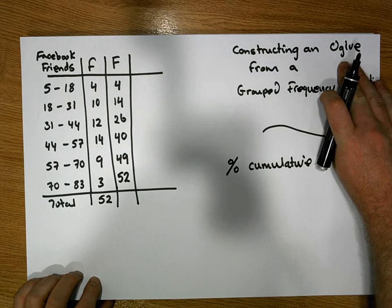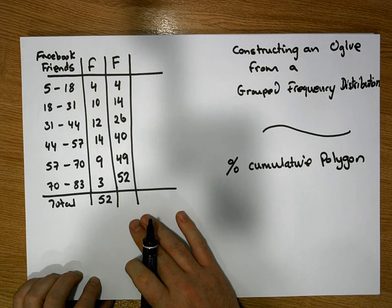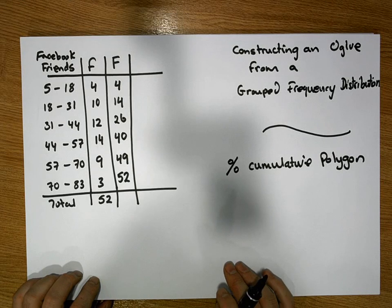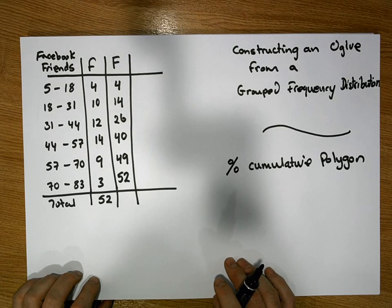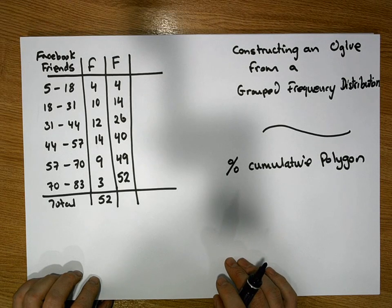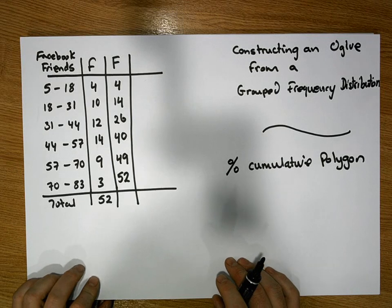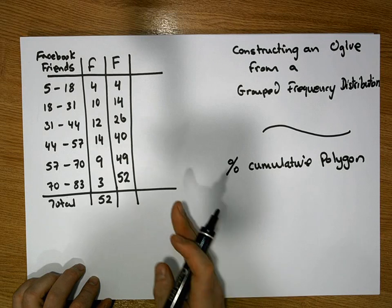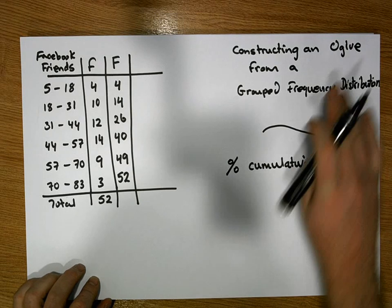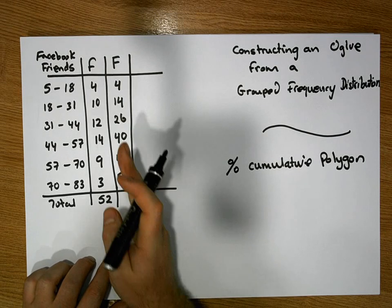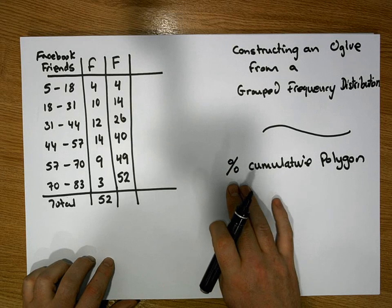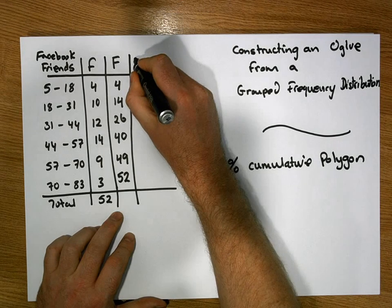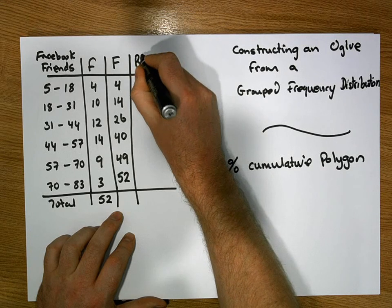We could construct an ogive from the cumulative frequencies, but there's one or two things that I want to do with the ogive. For example I'd like to be able to calculate the median, and I'd also like to be able to calculate the first quartile and third quartile, and then the interquartile range. So I'd recommend converting these cumulative frequencies into percentages. And then we use the percentage column to construct our ogive. So one step towards producing the percentages is to produce what's known as the relative frequencies, or the relative cumulative frequencies, symbolized by capital RF.